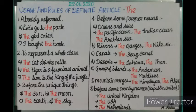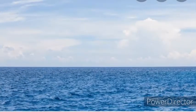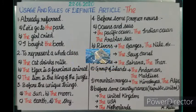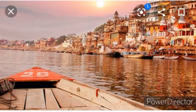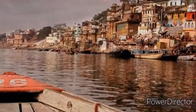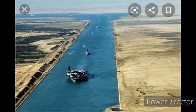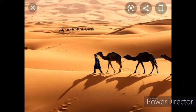In proper nouns, there are some categories where we use 'the.' The first is oceans and seas — before oceans and seas we use the article 'the.' For example: the Pacific Ocean, the Indian Ocean, the Arabian Sea. The second category is rivers — before rivers we use 'the,' for example: the Ganges, the Nile. Canals also take 'the.'